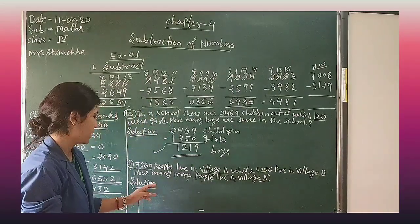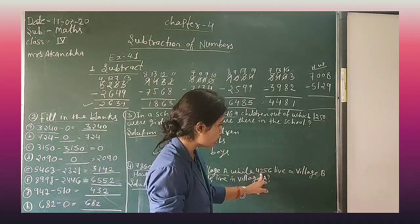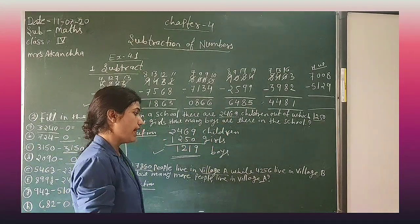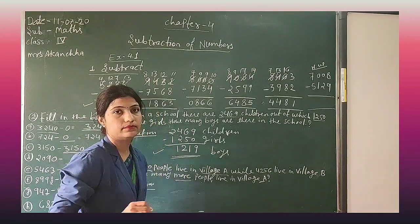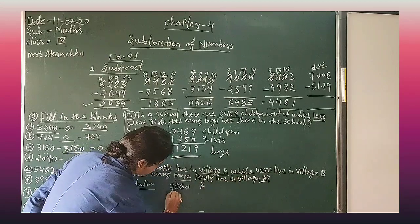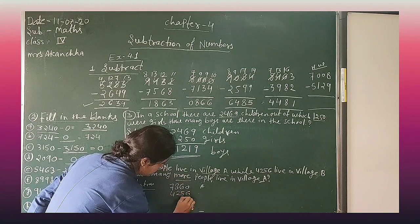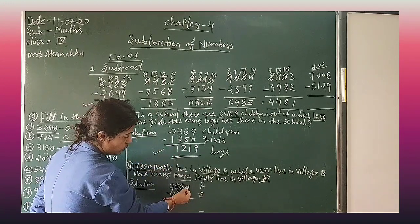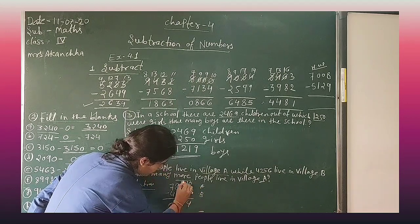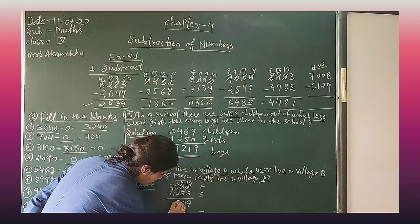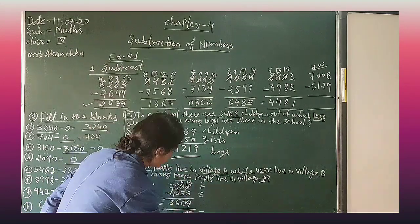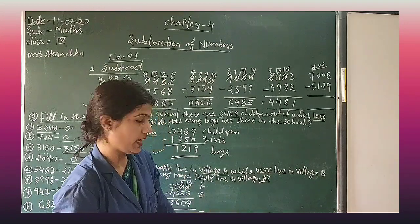Next question: 7860 people are leaving village A and 4256 people are leaving village B. How many more people are leaving village A? 7860 minus 4256: 0 minus 6 — borrow, 10 minus 6 is 4. 5 minus 5 is 0. 8 minus 2 is 6. And 7 minus 4 is 3. The answer is 3604 more people leaving village A.